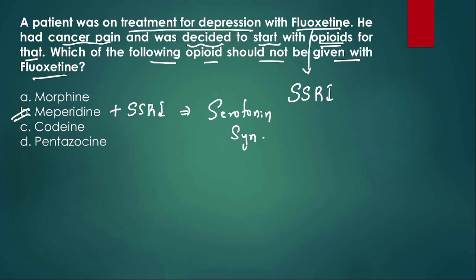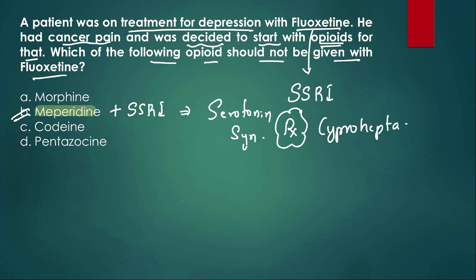Meperidine is also called pethidine — that is why this combination should not be given. The treatment for serotonin syndrome is cyproheptadine.